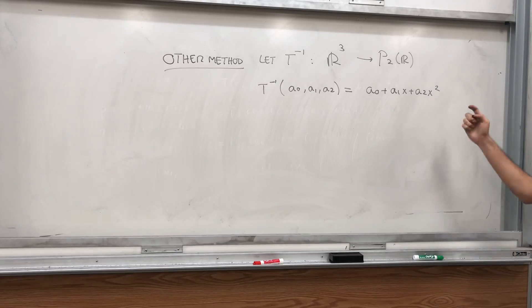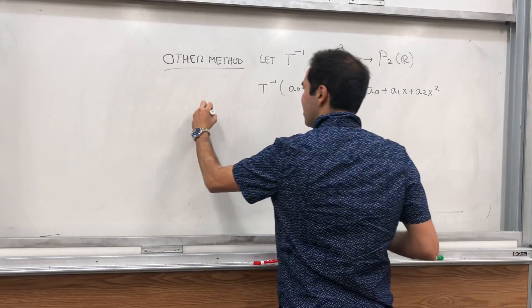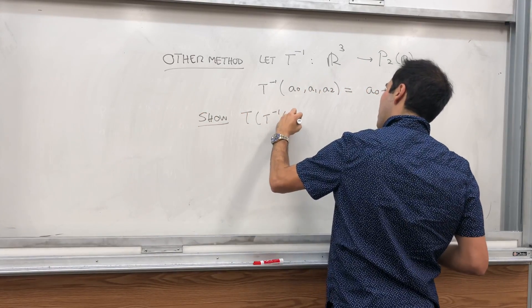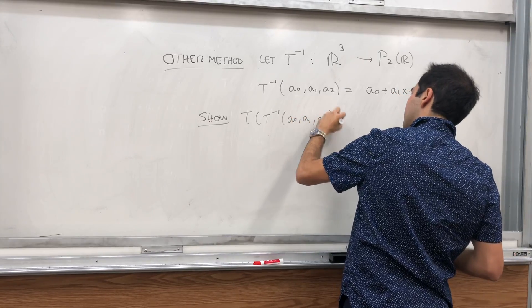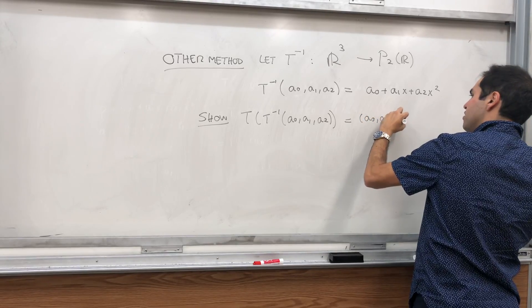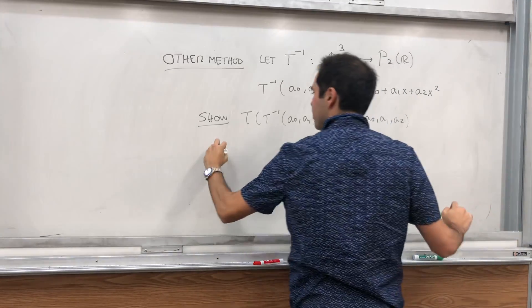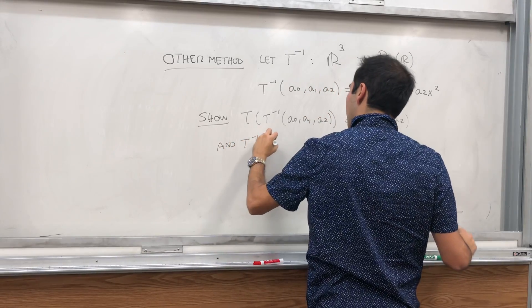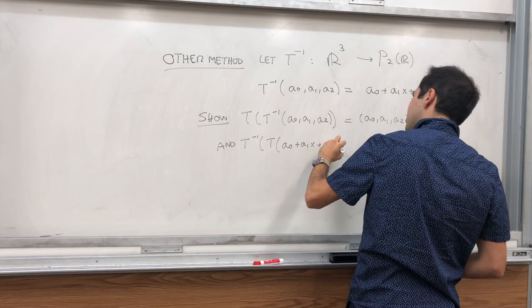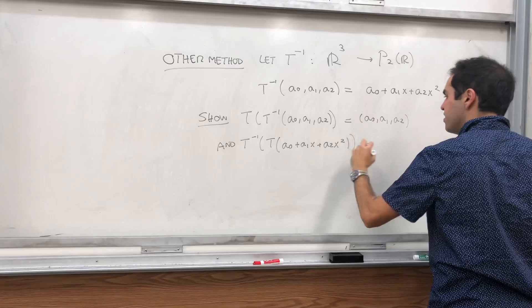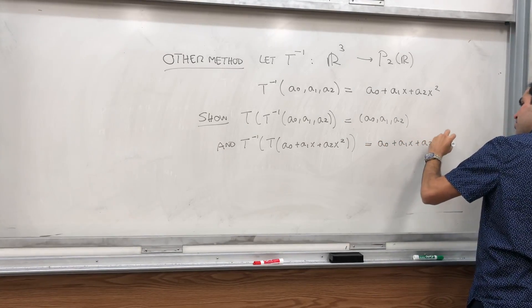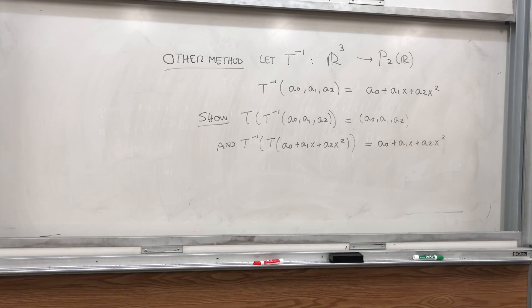Then all you really need to show is that T of T inverse of (a0, a1, a2) is (a0, a1, a2), and T inverse of T of any polynomial x plus a2x squared is simply the same polynomial.